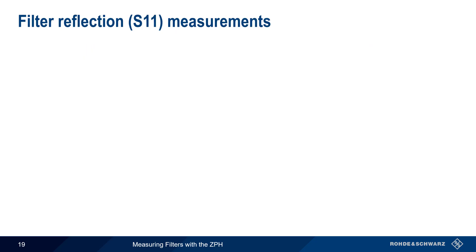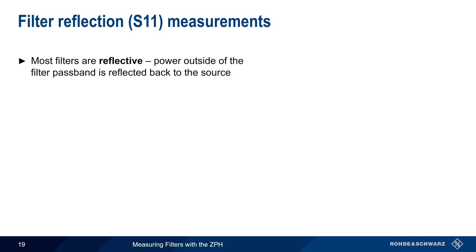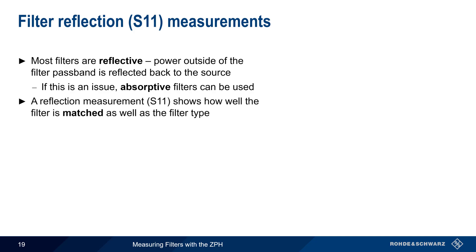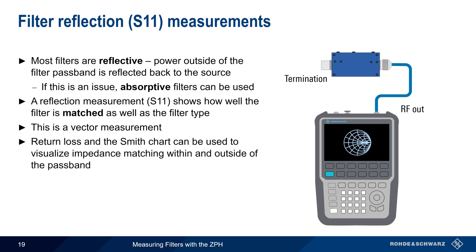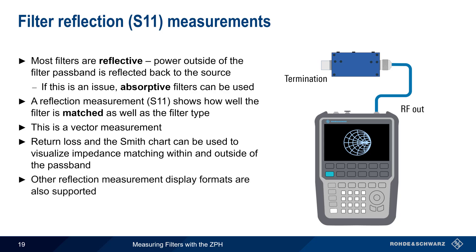Next we'll look at making reflection measurements on filters. Most filters are reflective in that they block or attenuate signals by reflecting power outside of the pass band back towards the source. In cases where reflected power might be an issue, special absorptive filters can be used instead. Although we normally associate filter testing with transmission or S21 measurements, reflection or S11 measurements are often useful because they show how well a filter is matched at different frequencies, as well as whether the filter is reflective or absorptive. We make reflection measurements using the ZPH by connecting the generator output to one port of the filter and terminating the other port. Note that this is a vector measurement — we are measuring both magnitude and phase. The most common ways of looking at filter reflection measurements are using a return loss plot as well as the Smith chart, but note that the ZPH also supports a number of other display formats as well.